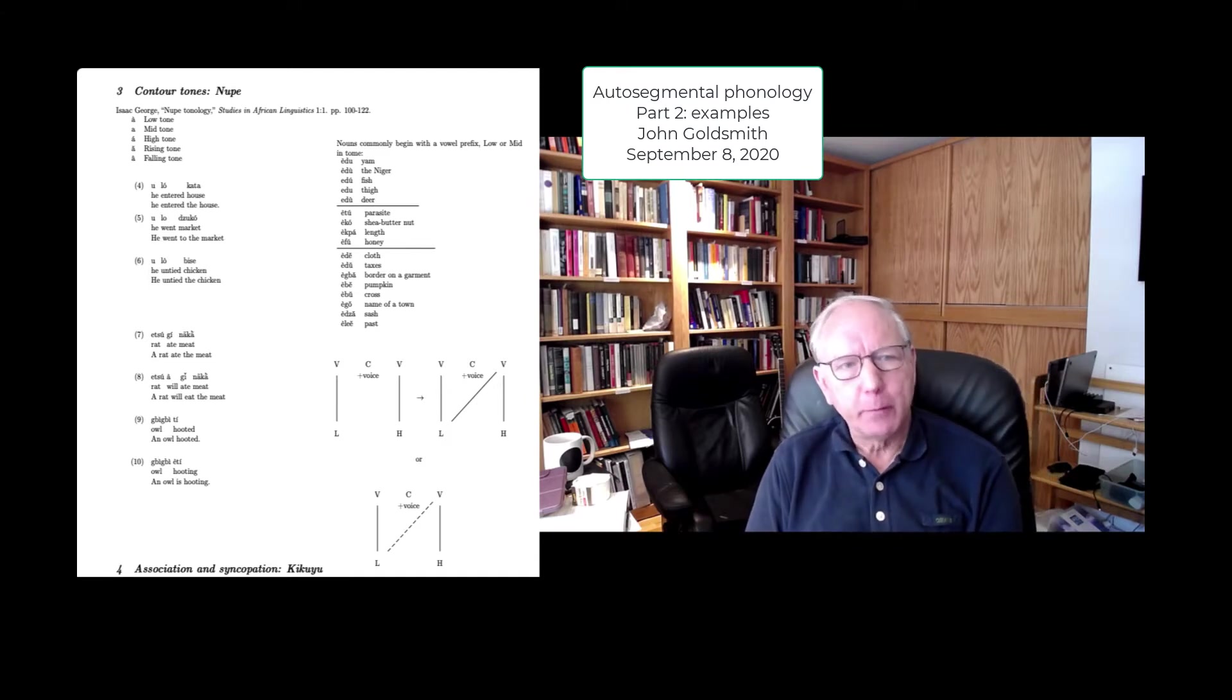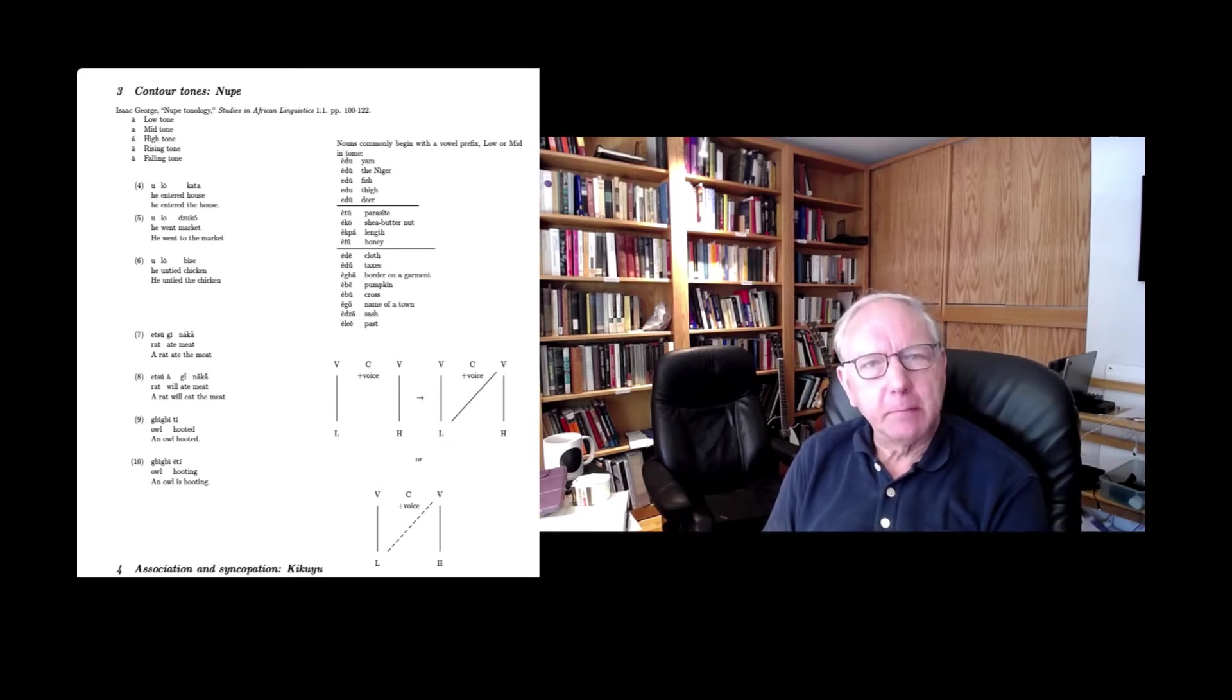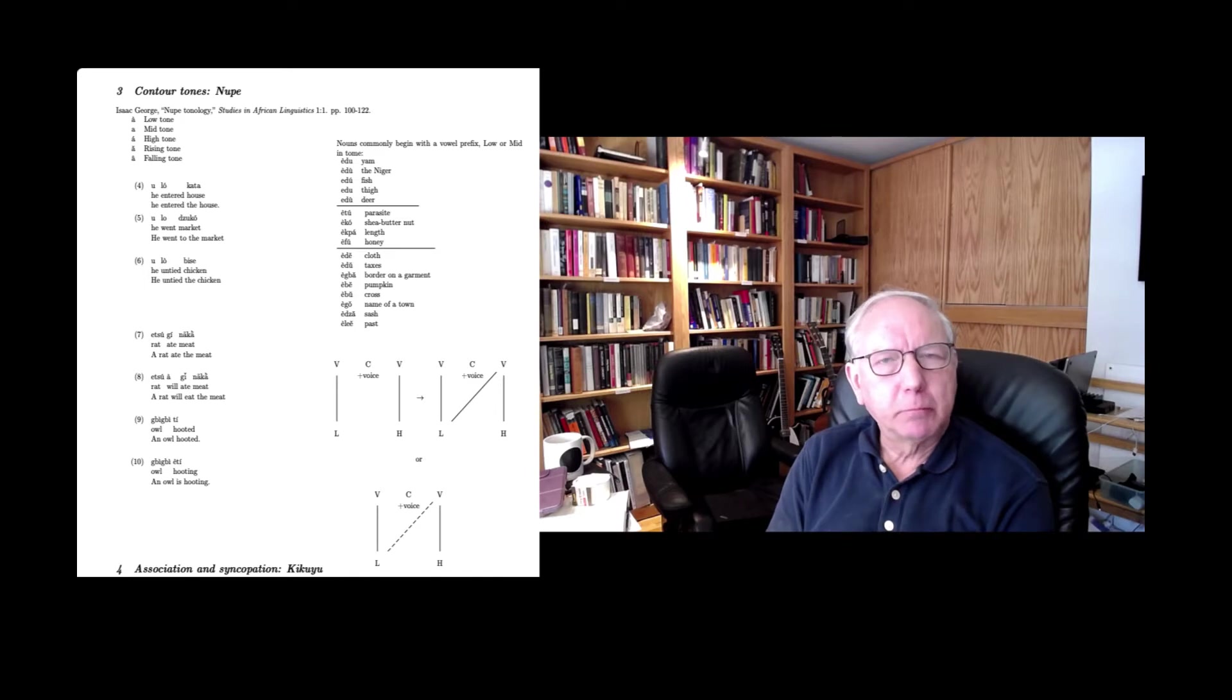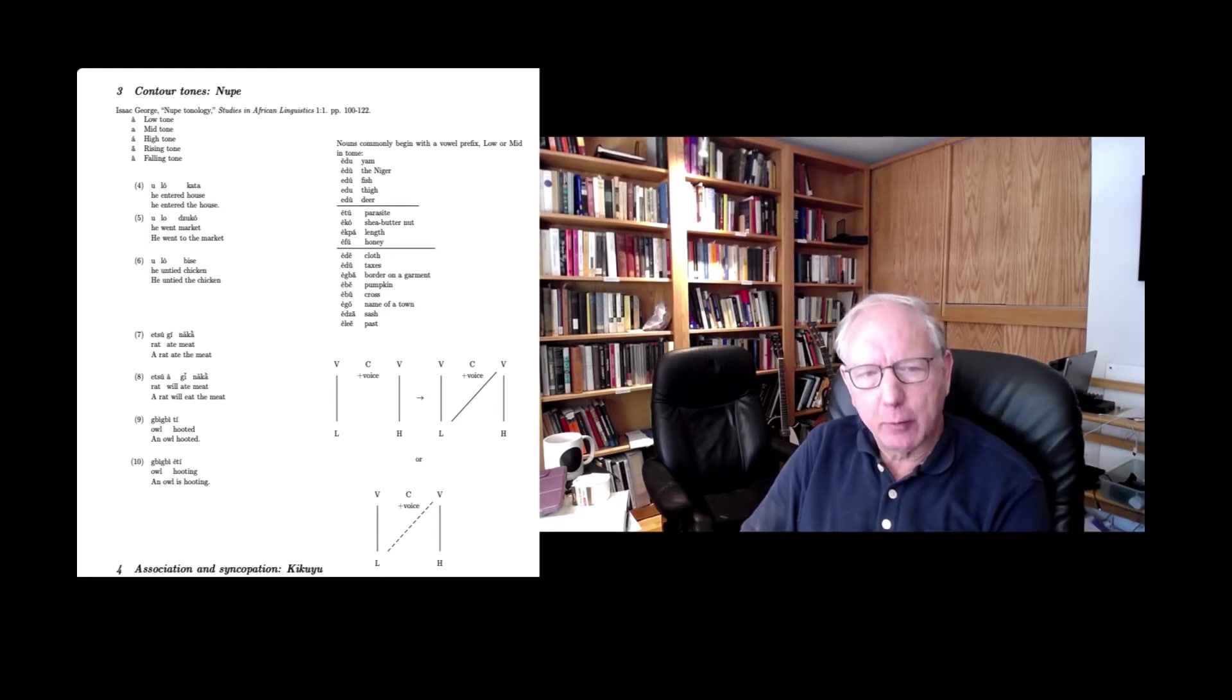The first has to do with Nupe. It's from an article written by Isaac George back in the mid-1970s. The article is called Nupe Tonology, and what we see in Nupe here is a pretty common phenomenon we find in a number of languages. We'll skip right to the conclusion here. There's an autosegmental rule that has as its input a sequence of low and high associated with adjacent vowels in that order, and those vowels are separated by a voiced consonant. In that case, when we find that case, we add an association line, or Nupe adds an association line, between the L, the low tone, and the following vowel, the vowel that had been and will continue to be associated with a high tone.